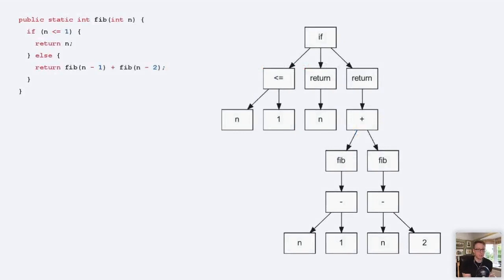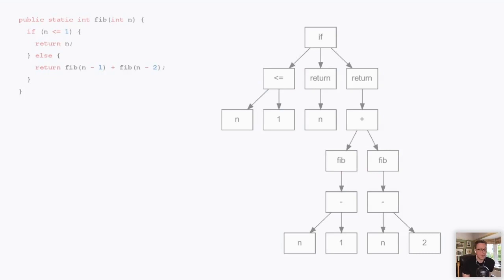The AST doesn't add much and it doesn't remove much. To run it, you'd follow one path from the root at the top to the leaves at the bottom. So we have an if, then we say less than or equal to n and one. Depending on whether that's true or false, we either take this route or that route. Then we add together the results of calling fib, and to call it we do n minus one, et cetera.